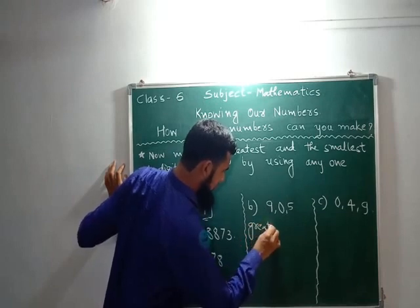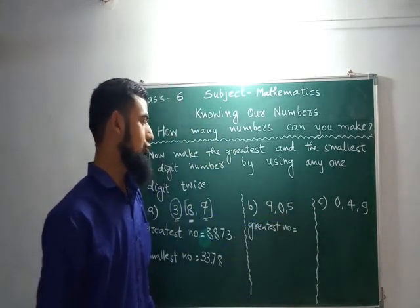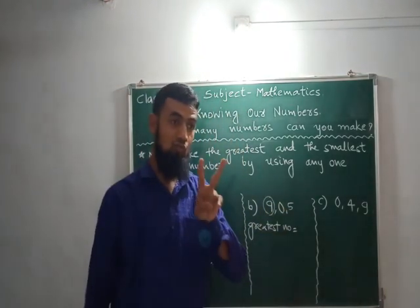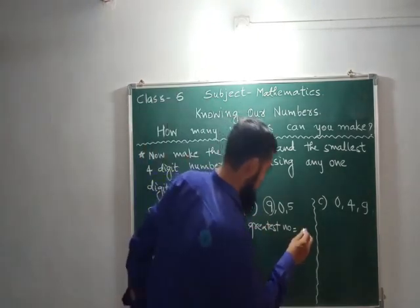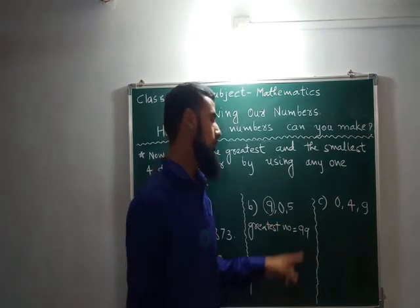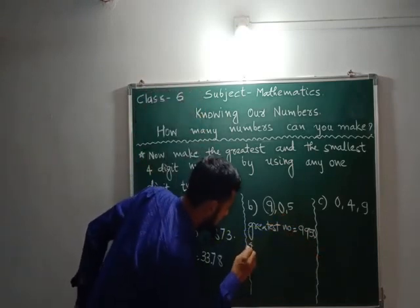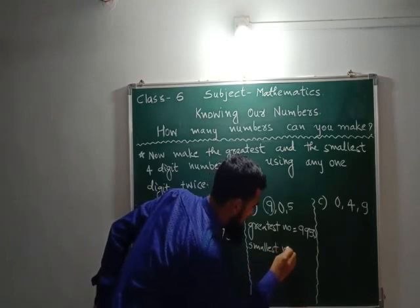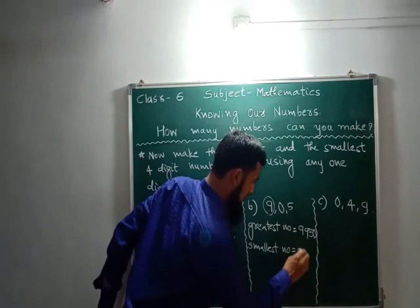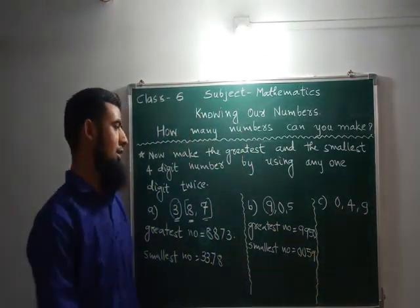Here in the second question, greatest number using 9, 0, and 5. Tell me which number is the biggest? 9. So we will write it twice. Then among 0 and 5, which is the biggest? 5. And the last is the smallest number: 0. For the smallest number, it will be 0 repeated twice, then 5 and 9.